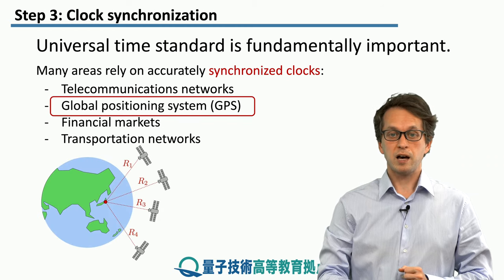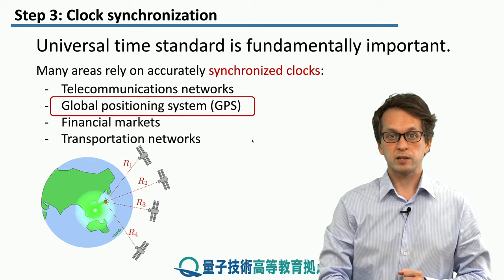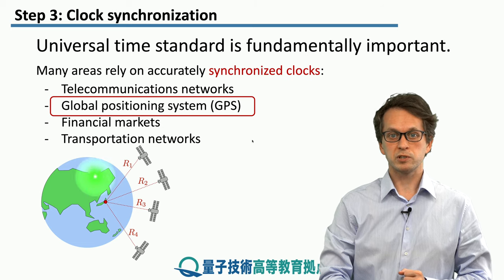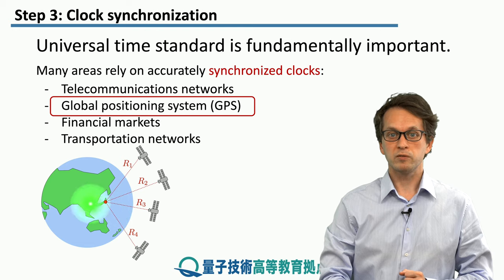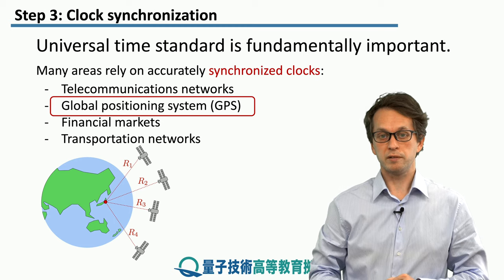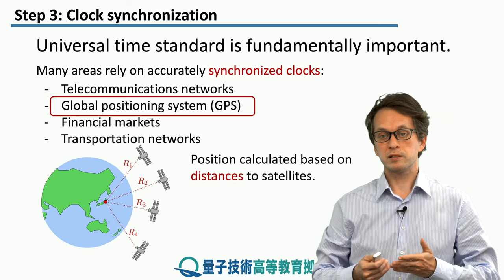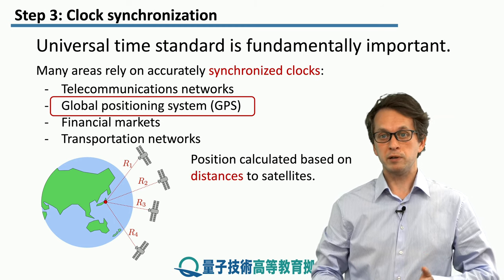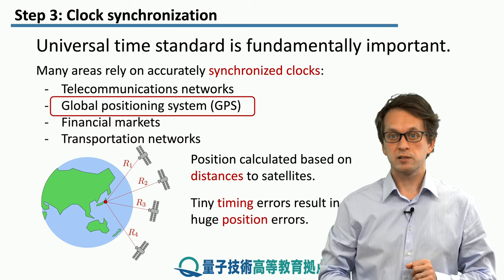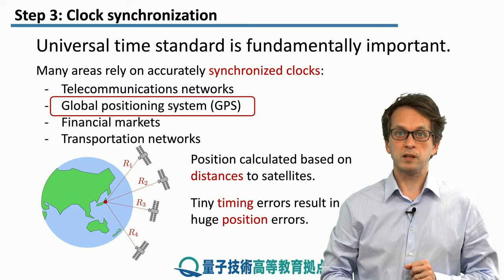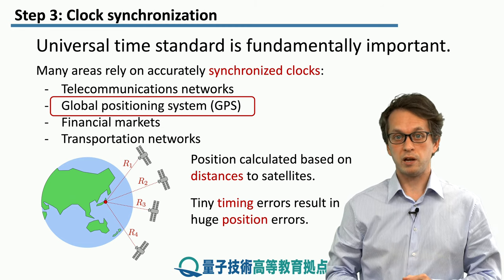For example, if we look at GPS and how it works — how it calculates the exact, very accurate position where we are — it computes the distances to four satellites, and from that it can locate with a very high degree of accuracy where we are placed on Earth. In order to calculate these distances R1, R2, R3, and R4, accurate timing is very important, because even tiny errors in timing can result in huge positional errors.